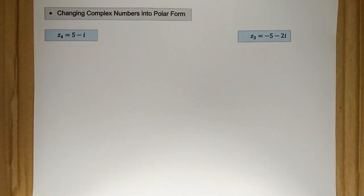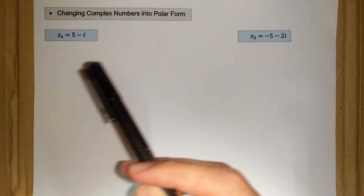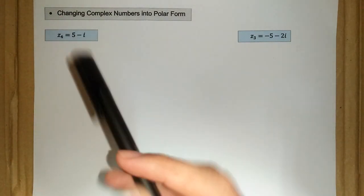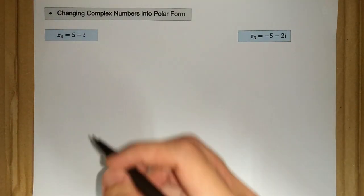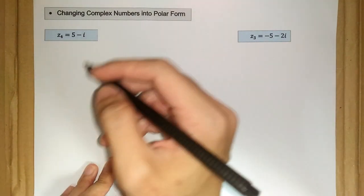Hello and hi everyone. So let's change this Cartesian form of complex numbers into its polar form or modulus argument form. For this example here, the first one is z₄ equals 5 minus i. So in an Argand diagram it should be like this.